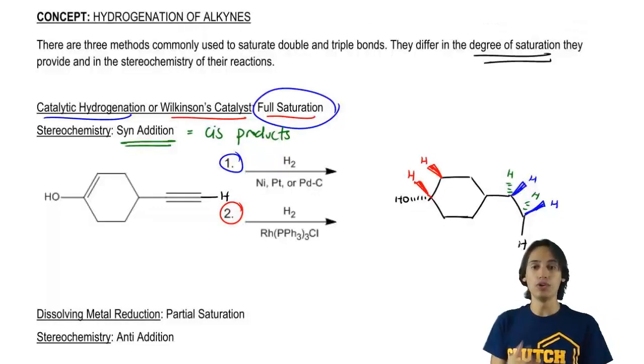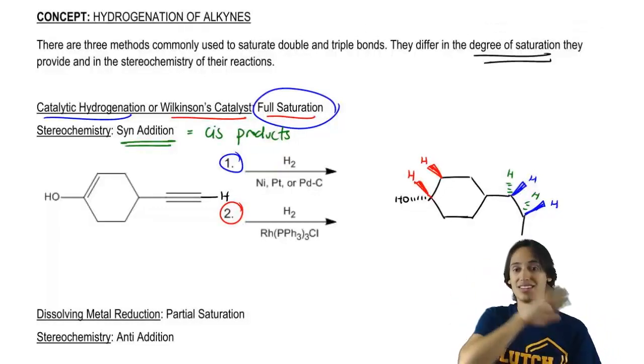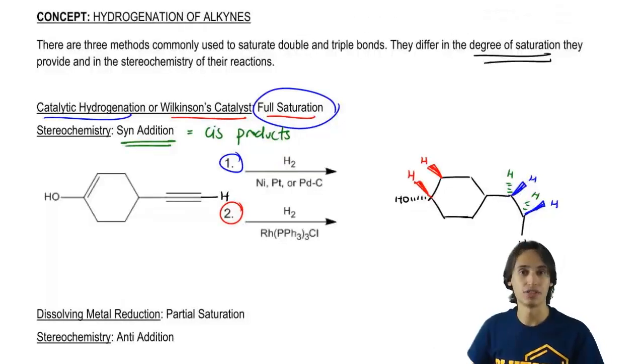So basically you can think that full saturation, or one of these two—catalytic or Wilkinson's—is going to completely get rid of all pi bonds, all double bonds and all triple bonds. Easy, right?